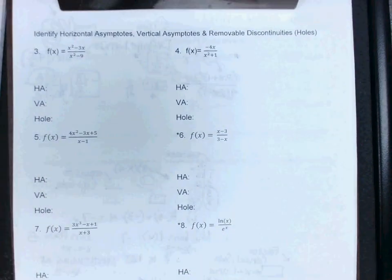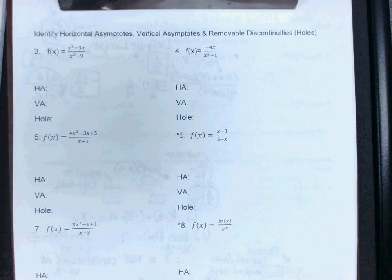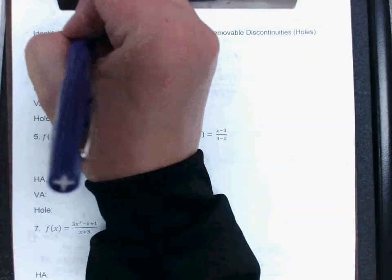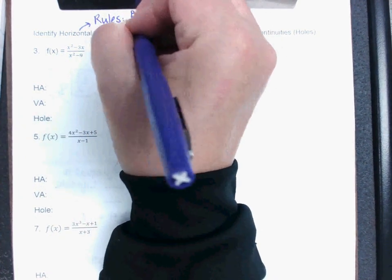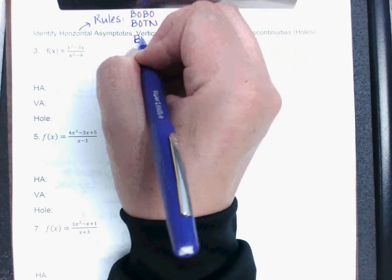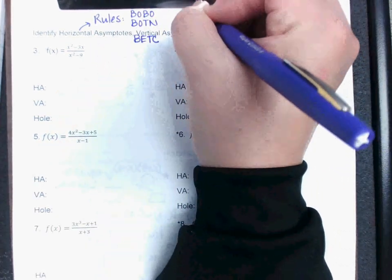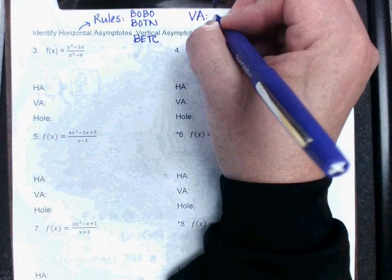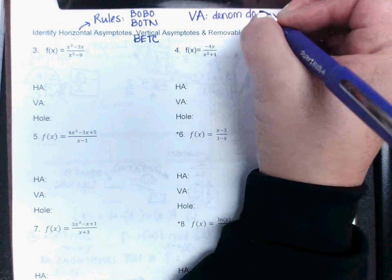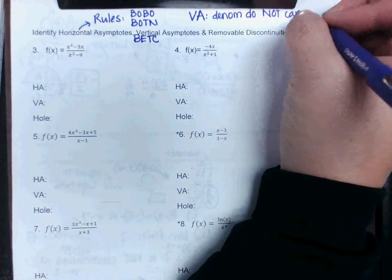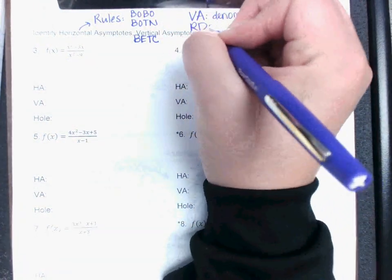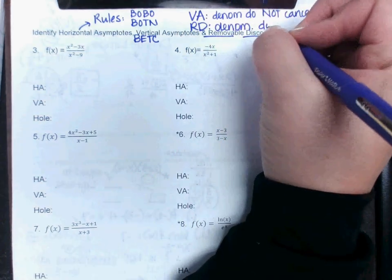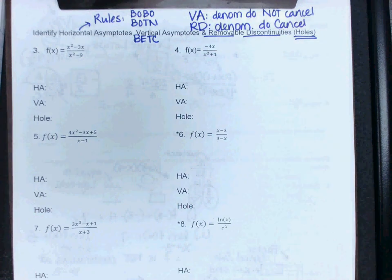On the back here, we are finding horizontal asymptotes, vertical asymptotes, and removable discontinuities. Horizontal asymptotes, you are using your rules, which are Bobo, Botan, and what was the other one? Betsy. For your vertical asymptotes, those are the terms in the denominator that do not cancel. And then remember that the holes are going to be the ones, the removable discontinuities are going to be the denominator terms that do cancel. So again, I'm not going to work all these, but I'll do a couple of them.